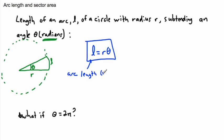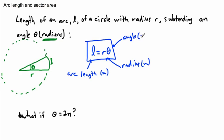L could be in meters, R is your radius of your circle, also in meters, and theta is your angle but it's written in radians. So if it's in radians this works; if it's not in radians then this doesn't work. You've got to have it in radians.